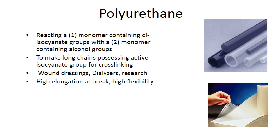Polyurethanes are formed by reacting a monomer containing diisocyanate groups with a monomer containing alcohol groups. They are used in wound dressings, dialysers, and research applications. Their high flexibility and high elongation at break — meaning they can be stretched considerably — make them well suited for dialysers and wound dressings.